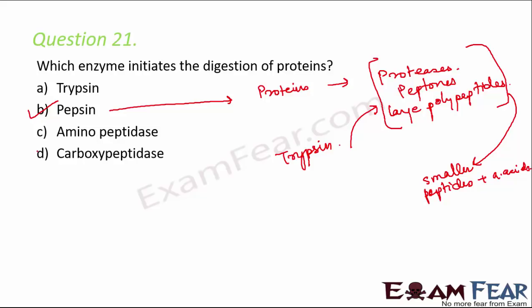Aminopeptidase is an enzyme that catalyzes the cleavage of amino acids. Carboxypeptidase is another enzyme which helps in conversion of smaller peptides into amino acids. All of these help in digestion of proteins but have different roles. The enzyme which initiates the process is pepsin.